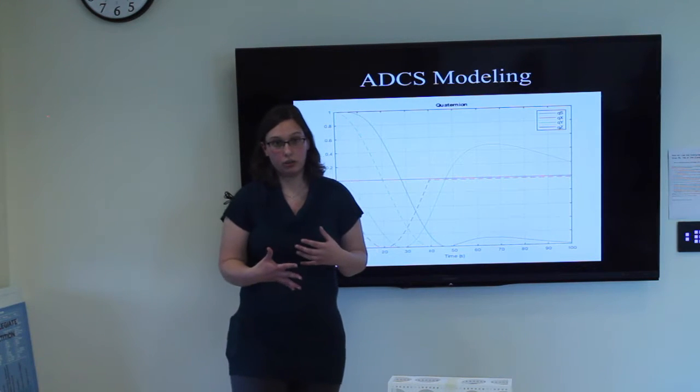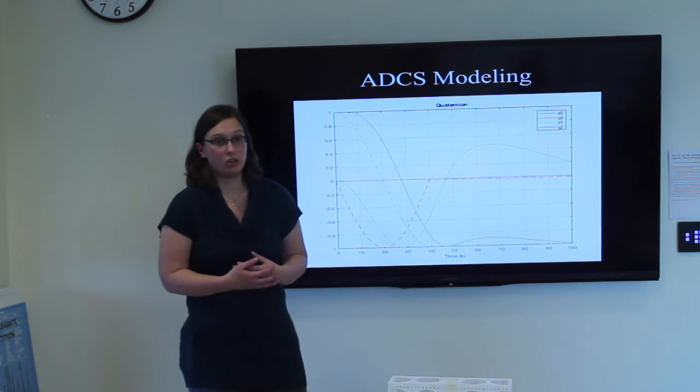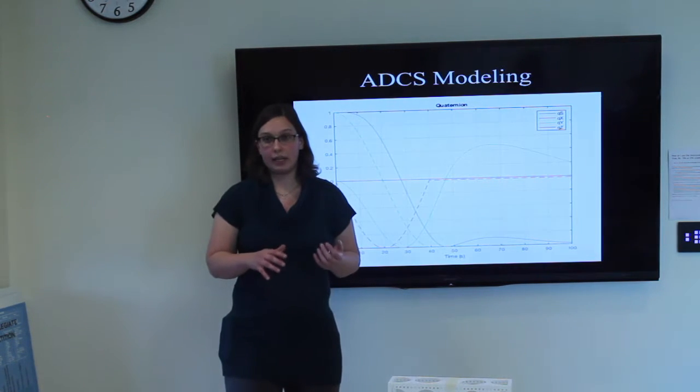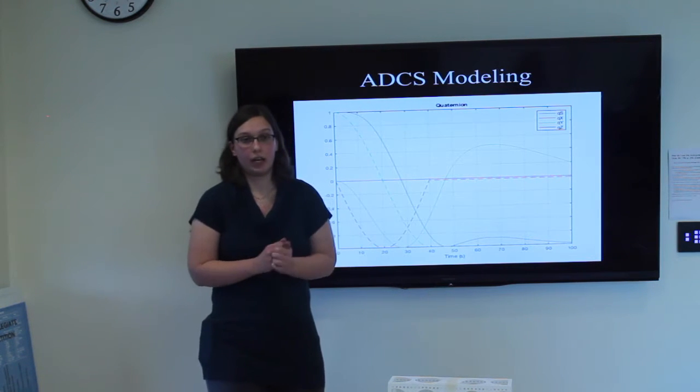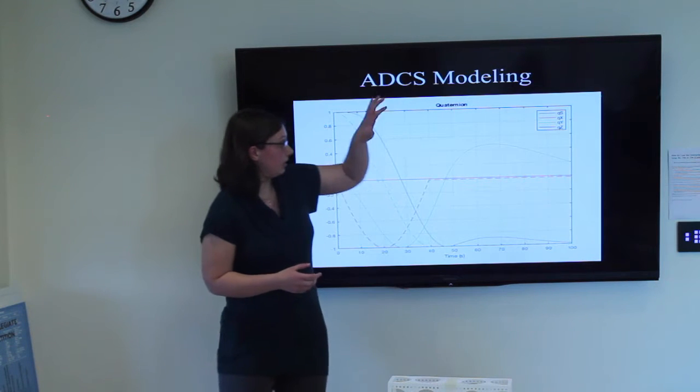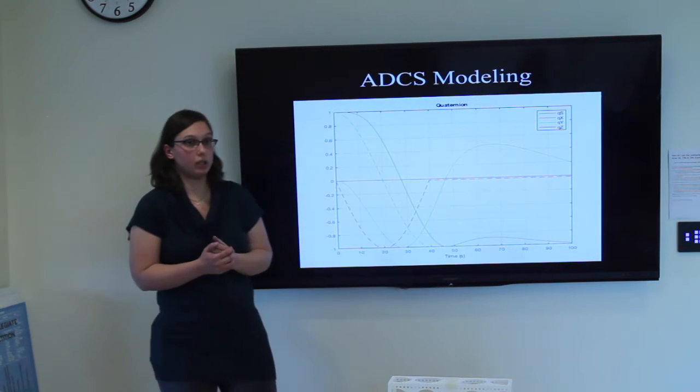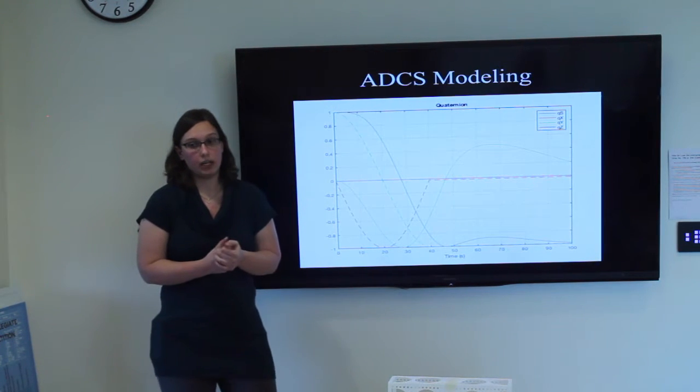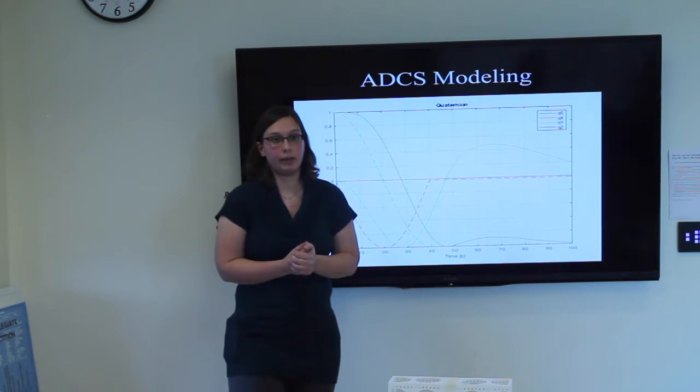My goal is to use a current program like Princeton Attitude Determination and Control Program and update it to match the requirements of the Canopy CubeSat. Right here on the screen you will see an example of one of the graph functions produced by this program. However...